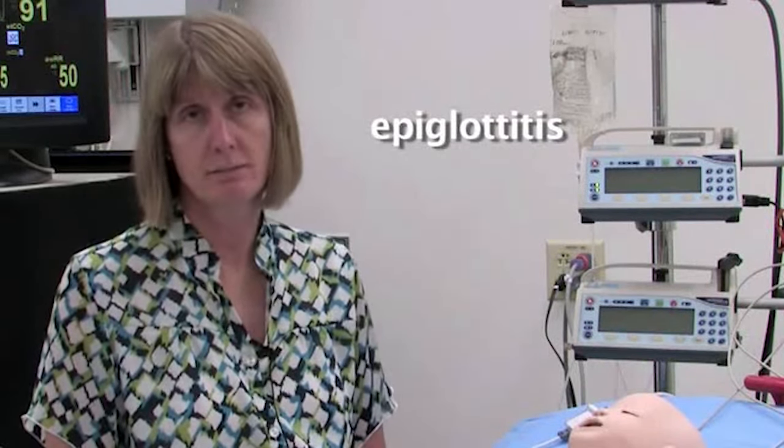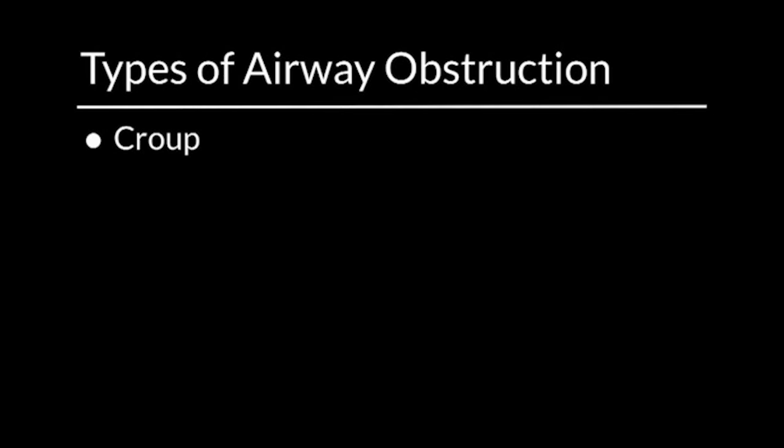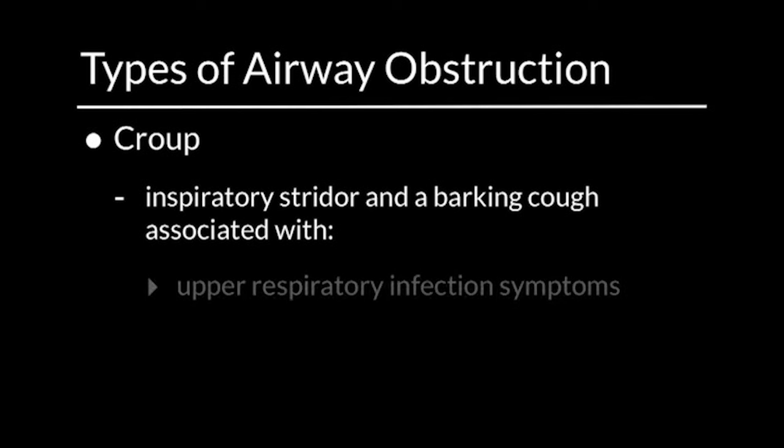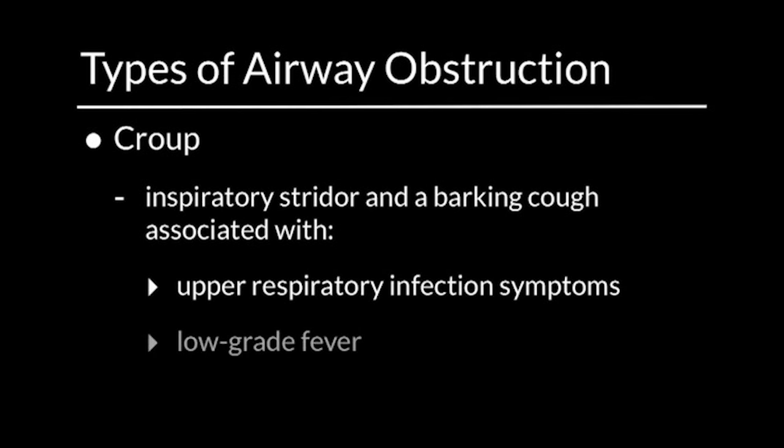Upper airway obstruction is one of the most dramatic presentations a child can appear with and can be very frightening to the child, the family, and the provider. It is important to recognize types of upper airway obstruction that require urgent and specific management. One of those is epiglottitis. Subglottic edema is the characteristic finding in croup, where one has inspiratory stridor and a barking type of cough associated with upper respiratory infection symptoms and low-grade fever.